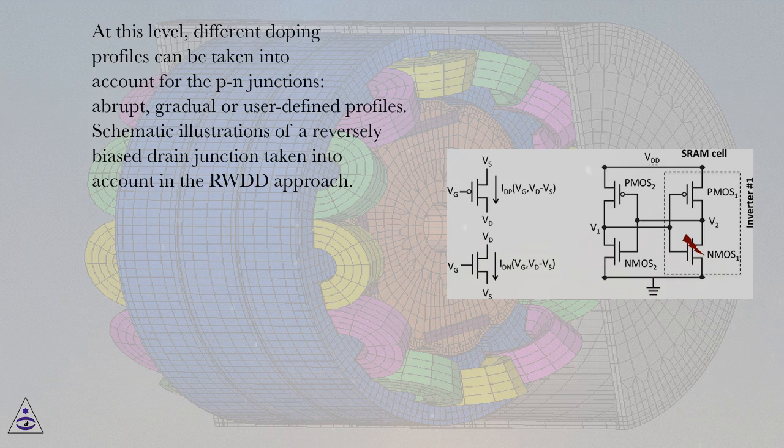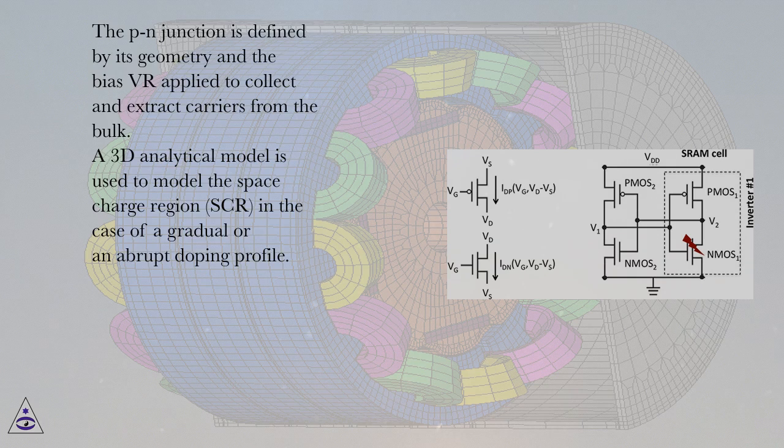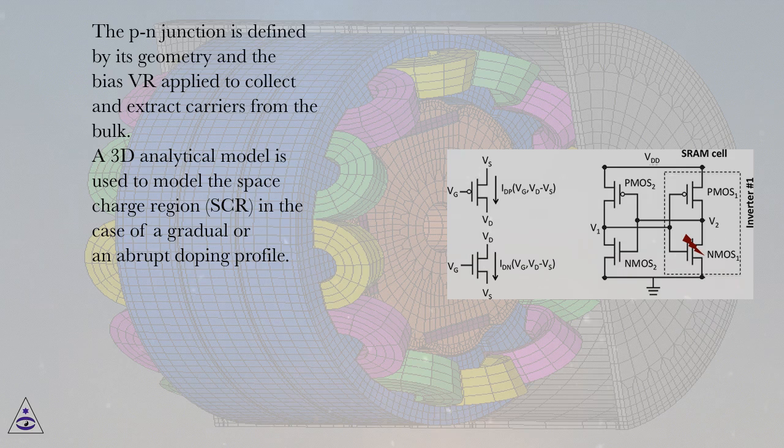Schematic illustrations of a reversely biased drain junction taken into account in the RWDD approach. The PN junction is defined by its geometry and the bias VR applied to collect and extract carriers from the bulk.